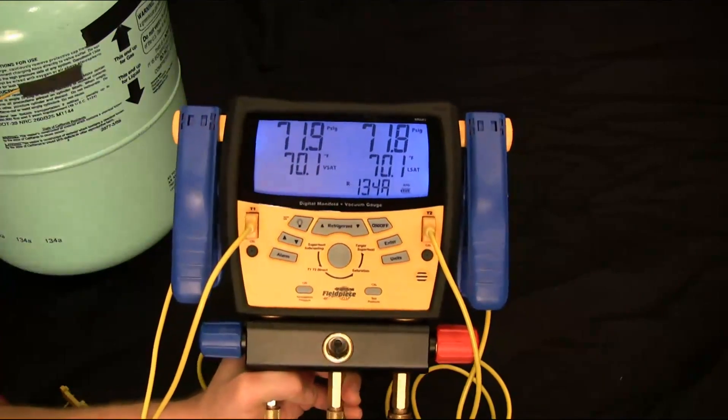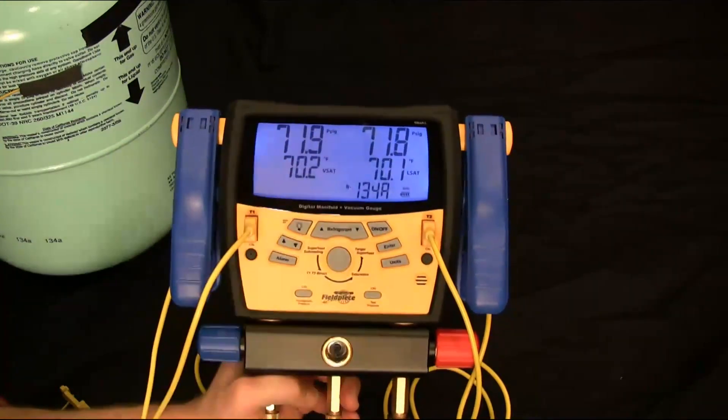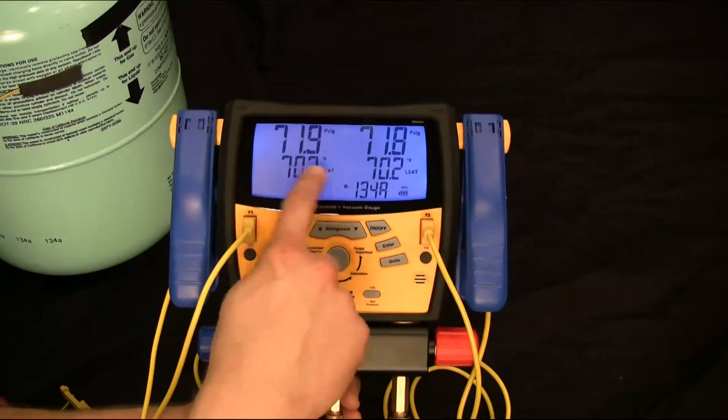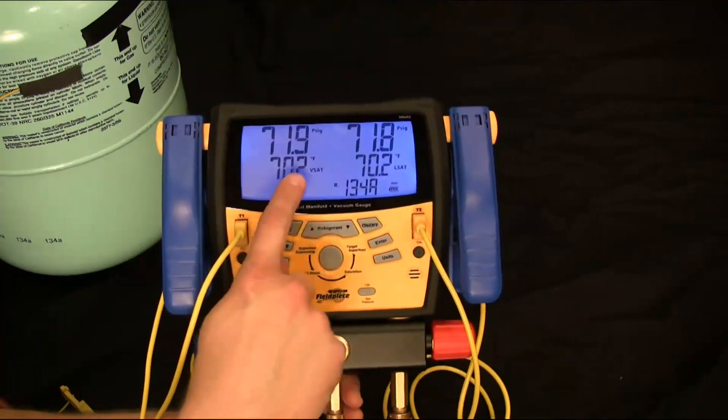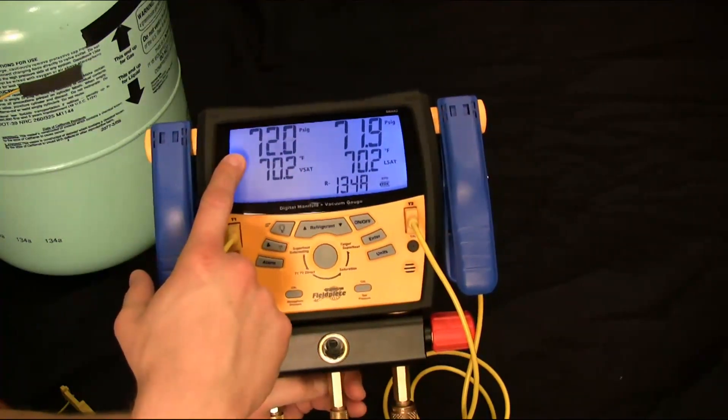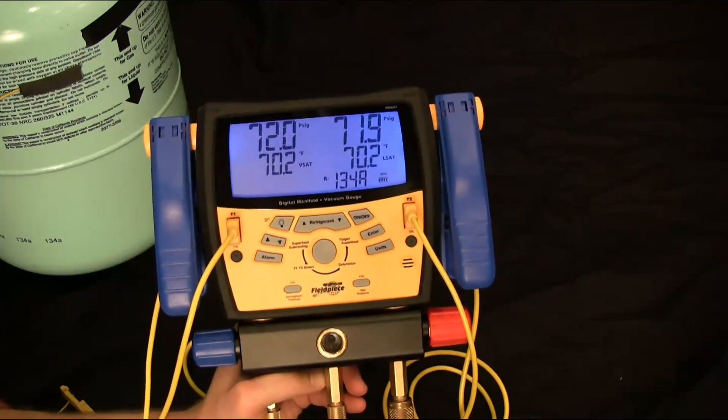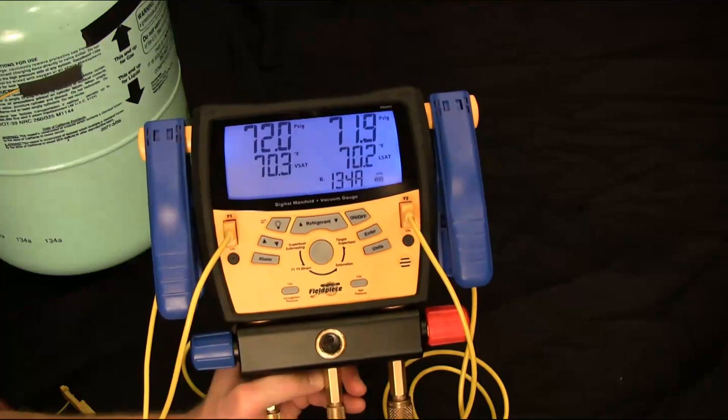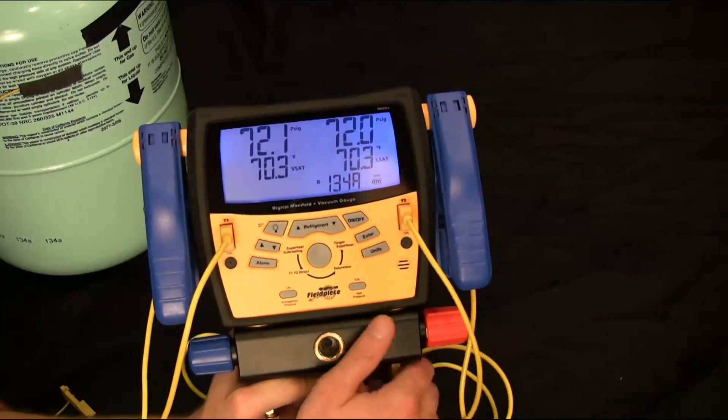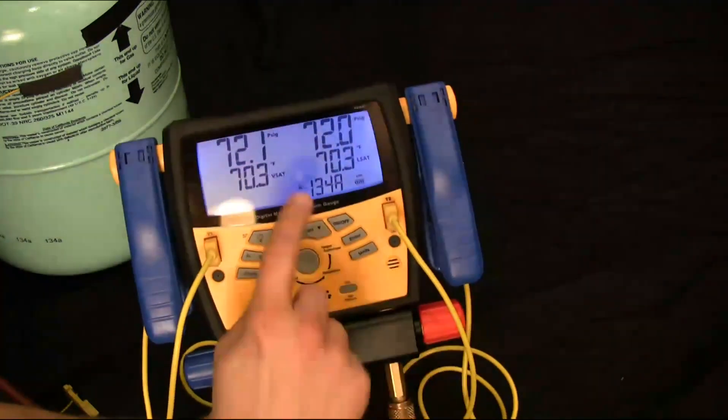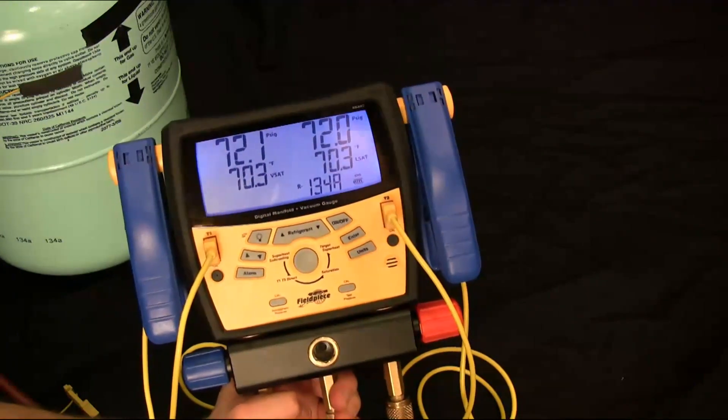All right. And you'll see that I got a pressure display right on the top right here. Now the vapor saturation, what this is telling you is at 71.9 degrees, it boils at 70.2 degrees. So it's basically pretty close to its boiling point right now. And then same thing with the liquid saturation temperature.